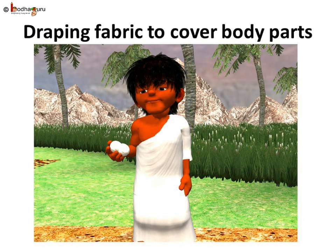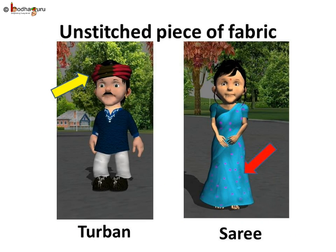So, what types of clothes were made out of these fabrics? Was it pants or shorts? No. In those days, stitching was not known, so people simply draped the fabrics around different parts of their body. Just like even today, saree, dhoti, lungi or turban is used as a long unstitched piece of fabric.